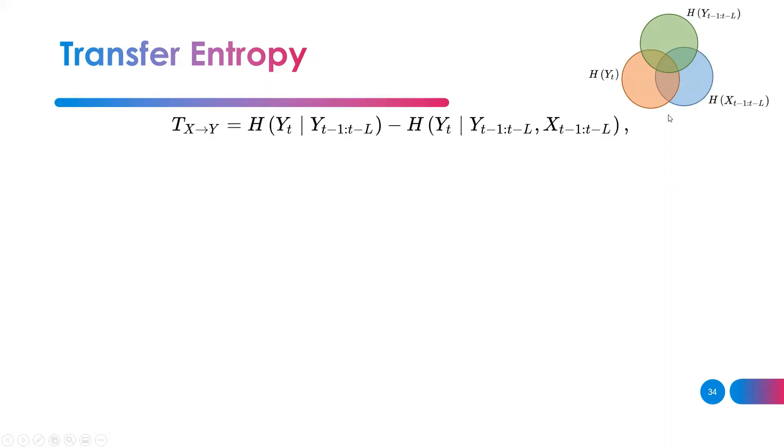Bring the three circles we looked at earlier. Let's call the orange H(Y), the green H(Y_{t-1} up until t-L) which is the past values, the entropy of the past values of Y, and the entropy of the past values of X.